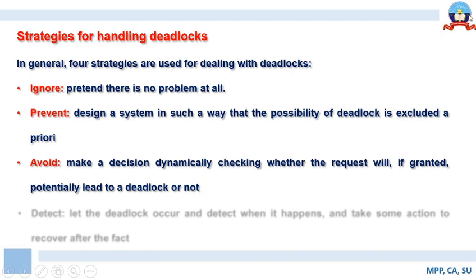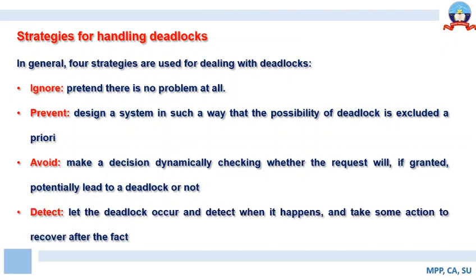The third strategy is to avoid deadlock — make decisions dynamically to check whether a request causes a deadlock or not. Deadlock avoidance mechanisms allow you to determine whether allocating a resource to a process leads to deadlock at a later point in time. The fourth strategy is to detect — let the deadlock occur, detect it when it happens, and take action to recover after its occurrence.